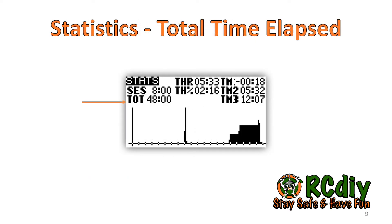On the statistics screen, there is a new total timer. This shows the cumulative time the transmitter has been used. This could be used to track how long the battery has lasted on its current charge. Long press Enter to reset it.